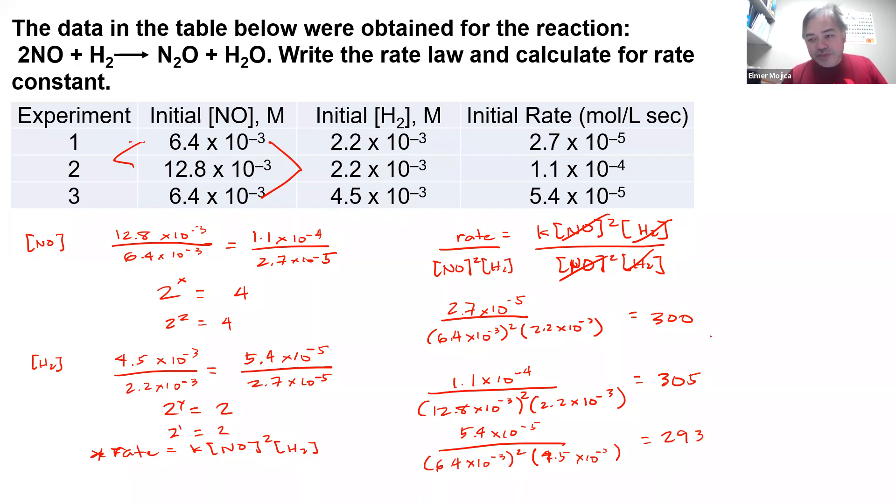It has something to do with the rounding that we have, because here this is not really 4.0, it is a 4 point something. So that gives it the, what we call, making the rate constant a little bit not the same, but at least 300, 305, 293, they're close to one another.